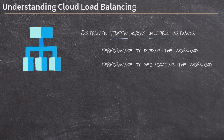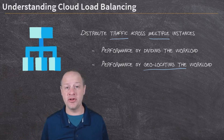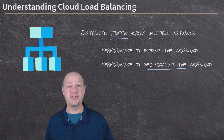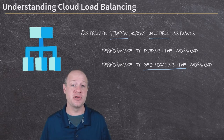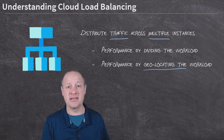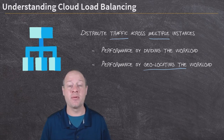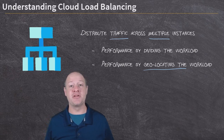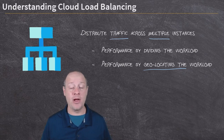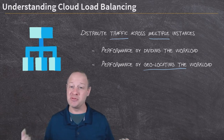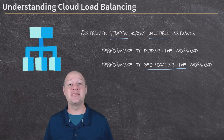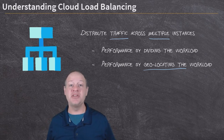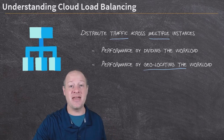You also get performance by geolocating the workload — distributing it to instances that are geographically close to the person making the request. Consider an application used by people all over the world. If you can load balance your users in Europe to servers in Europe and your users in the United States to servers in the United States, those users are going to see better performance and better response times. Google already has these data centers; we simply need to spin up services in the right regions and zones.